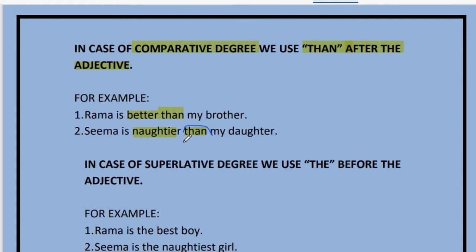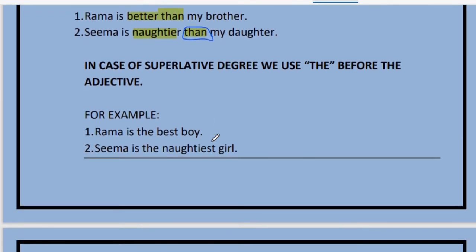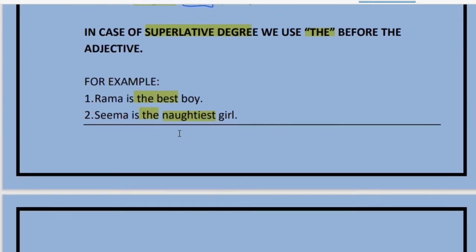In positive degree we put 'as' before and after the adjective; in comparative degree we put 'than' after the adjective. For the superlative degree, we always use 'the' before the adjective, because superlative means the best or the worst — the supreme quality, of which there is only one. For example: 'Rama is the best boy' or 'Sima is the naughtiest girl.'